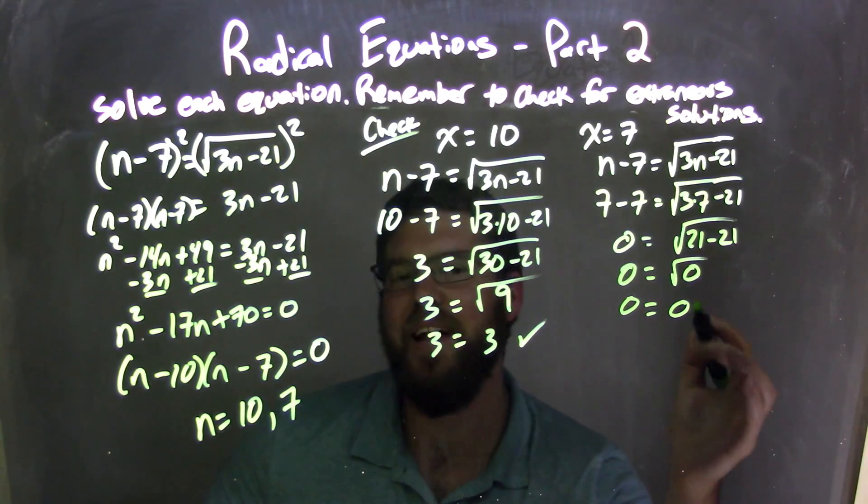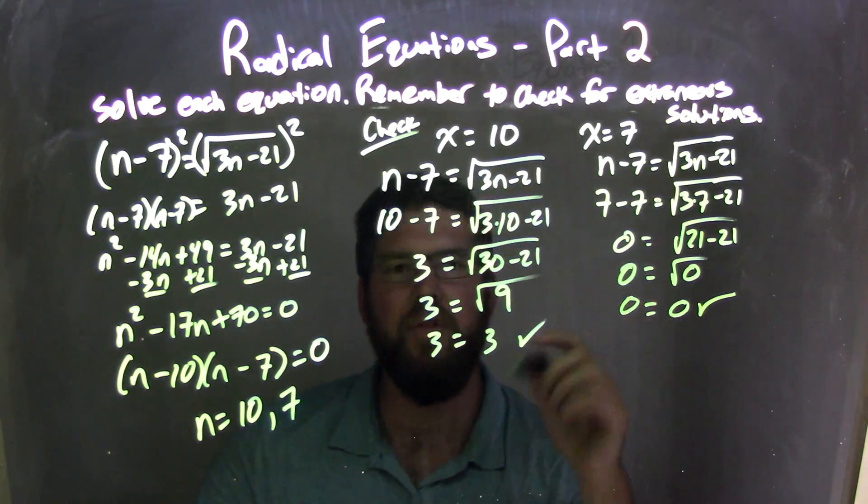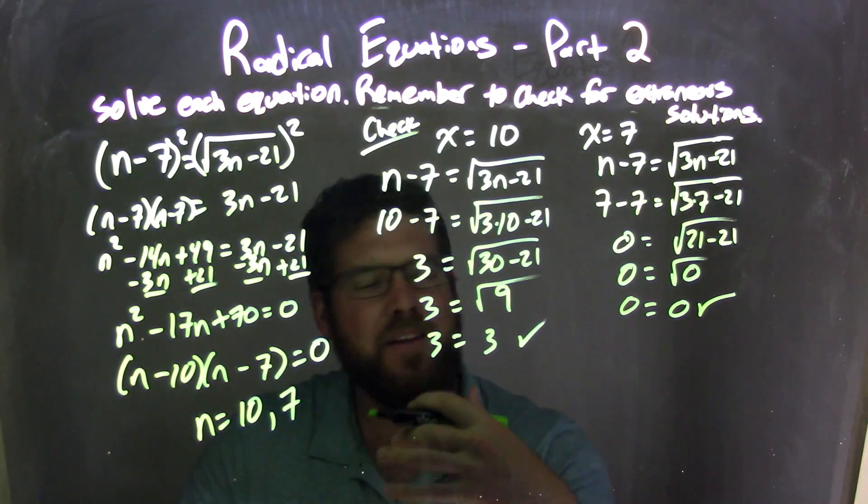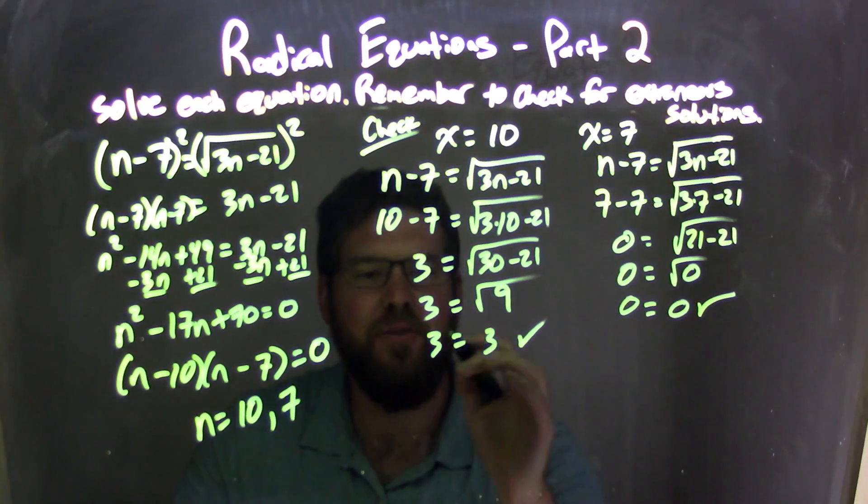And the square root of 0 is just 0. So in this case, my left and right hand side are also both equal to each other. Making 10 and 7 both real answers. There's no extraneous solution.